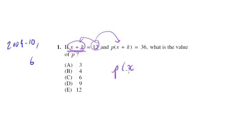So we're going to get p times x plus k is equal to 36. So we know x plus k is 12, so we're going to just swap in 12 for that. So we get 12p equals 36, divide both sides by 12, and we get p is equal to 3, which is choice A.